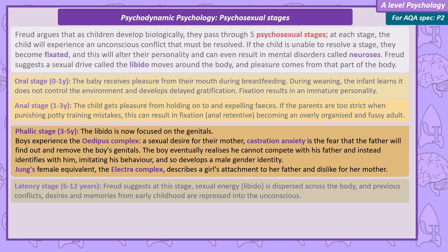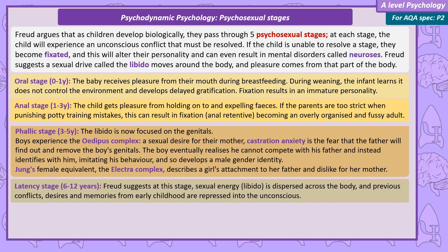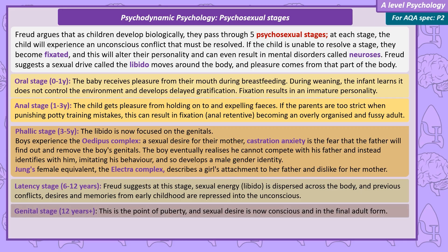In the fourth latency stage, between six and twelve, Freud suggests that sexual energy is dispersed across the body, and desires and memories from early childhood are repressed into the unconscious. In the final genital stage, from around 12 years — the point of puberty — sexual desire is now conscious and in its final adult form.